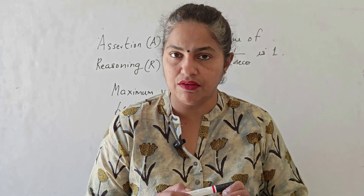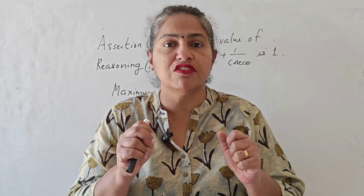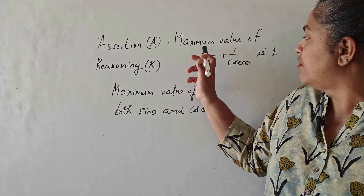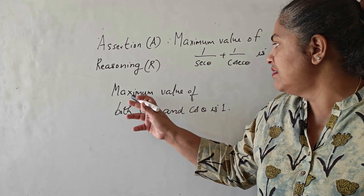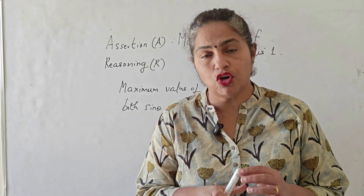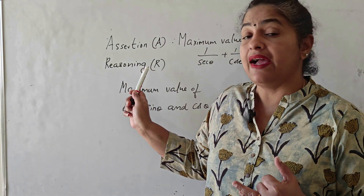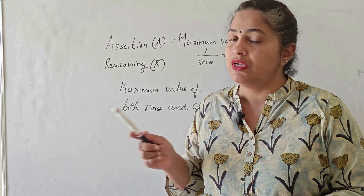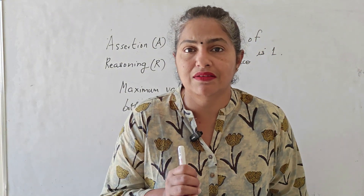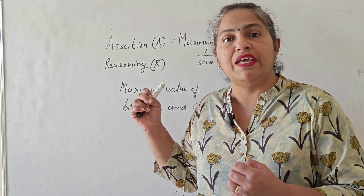The next question is an assertion-reasoning question. This kind of question requires thorough understanding of the concept — it may or may not be based on calculations, but conceptual knowledge is very essential. The assertion (A) is: the maximum value of 1/sin θ + 1/cosec θ is 1. The reason (R) is: the maximum value of both sin θ and cos θ is 1. Four options are given: both correct with R explaining A; both correct but R not the correct explanation; A correct but R wrong; or A wrong and R correct.